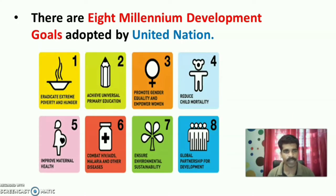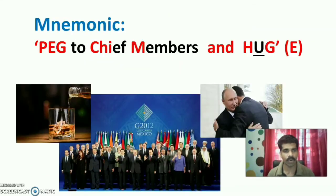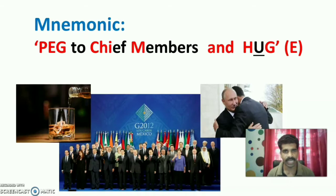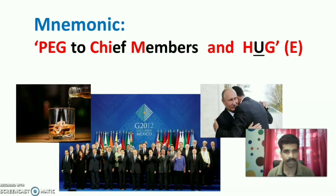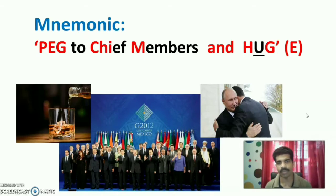There are 8 Millennium Development Goals adopted by the United Nations. I have made a mnemonic: PEG TO CHIEF MEMBERS and HEG. PEG is the starting word and HEG is the ending word — you can remember this mnemonic as 'peg to chief members of Millennium Development Goals and heg.'